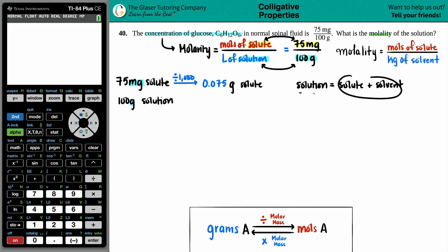and together they make up the solution. So if we know that we have 100 grams of the solution and I know that I have 0.075 grams of just the solute, I can just solve for x.